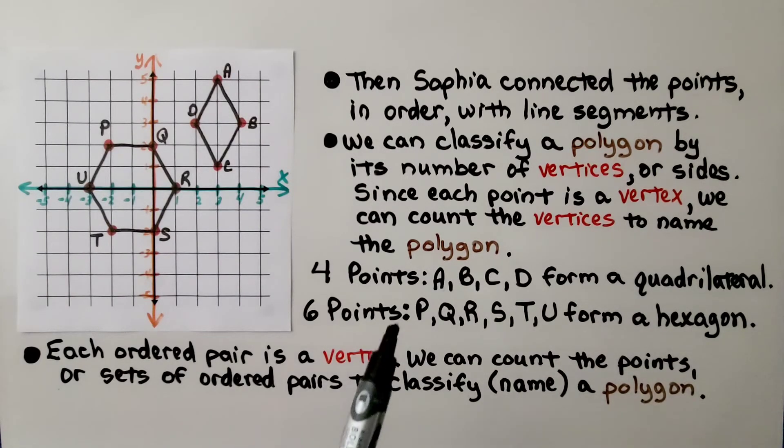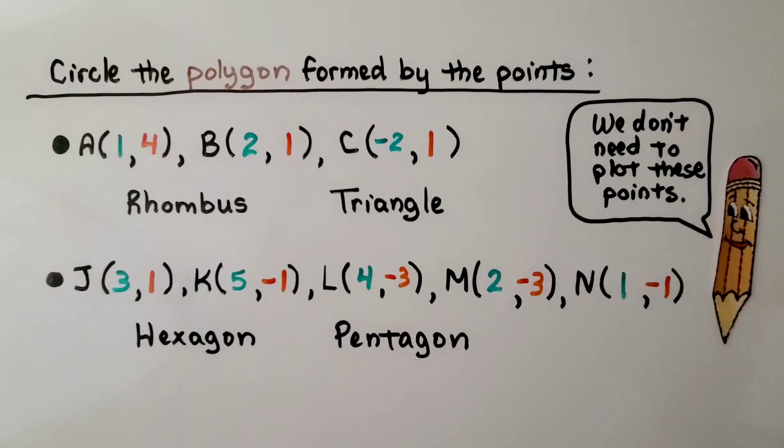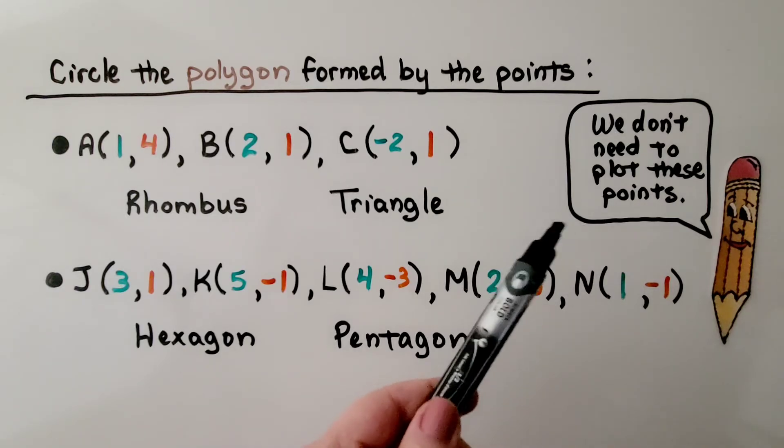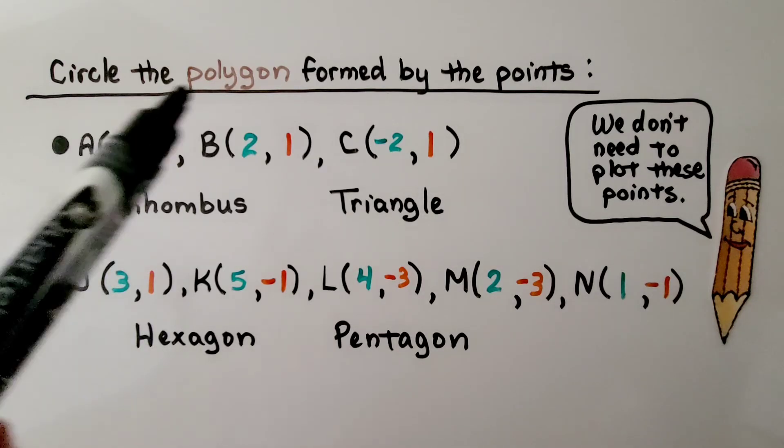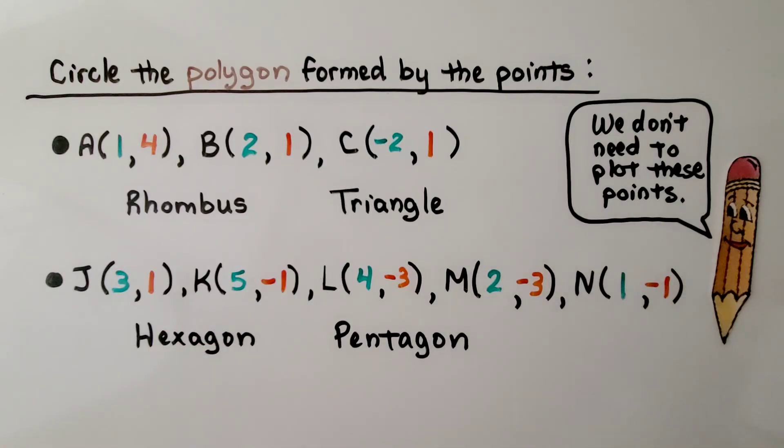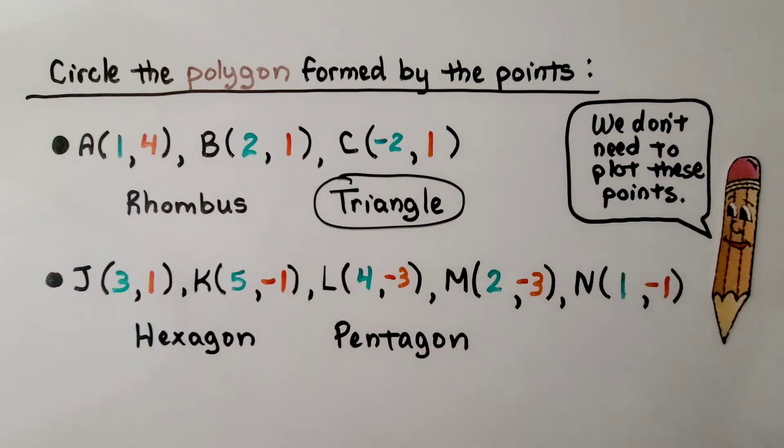By counting the number of points, 1, 2, 3, 4, 5, 6, that will tell us the type of polygon that it is. It's telling us to circle the polygon formed by the points. And, remember, we don't need to plot these points. You could if you wanted to. But, we just count. We have 1, 2, 3 points. That means there's 3 vertices. Well, that must be a triangle. A triangle has 3 vertices.